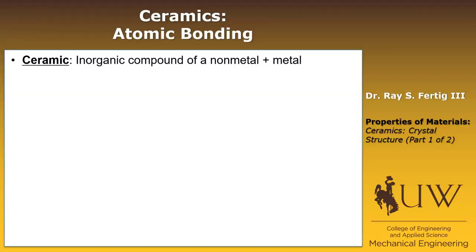So let's first answer the question: what is a ceramic? Well, a ceramic is just an inorganic compound of a non-metal and a metal. If you don't remember that, just think: if it's not a metal, if it's not a polymer, if it's not a semiconductor, then it's probably a ceramic.